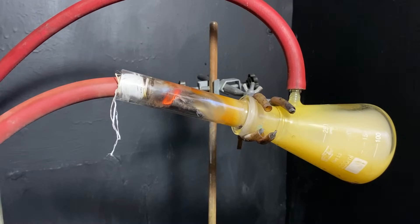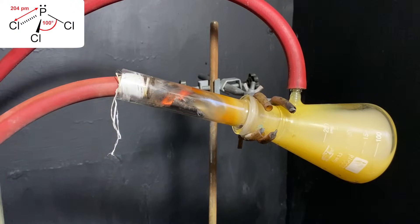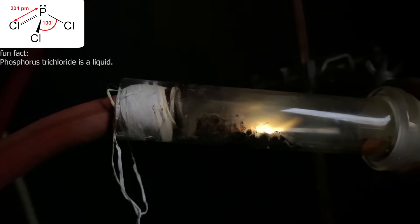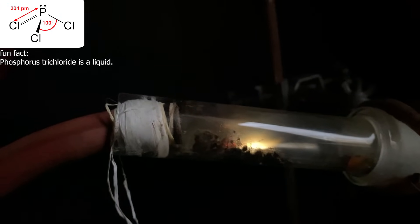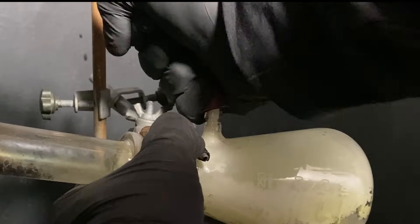Eventually, the white mist turns this yellowish color, and that's due to some phosphorus trichloride forming. And to convert the useless trichloride into the useful pentachloride, I generate some excess chlorine, which will react with the trichloride.